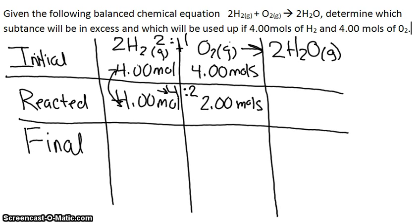So for H2, you subtract 4 minus 4 gives you 0 moles. And for O2, it's 4 minus 2, so that gives you 2.00 moles.